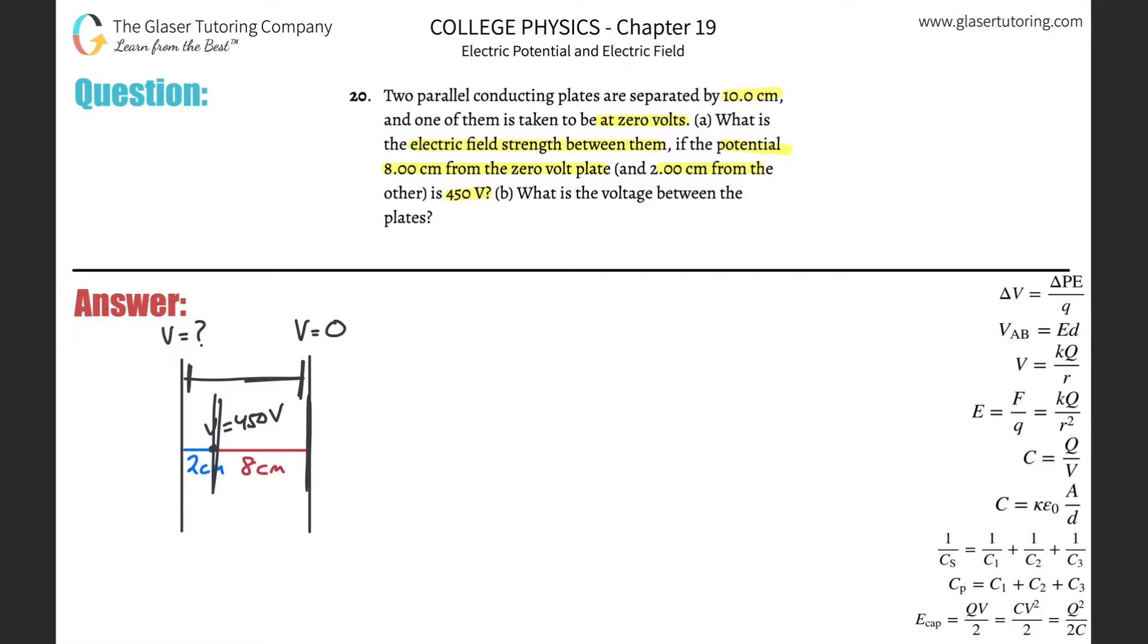So what that means is that I have a distance. Remember we have to base it off of the zero volt plate. Why? Well because remember the formula: the voltage between point A and point B basically really means the voltage difference is equal to the electric field strength between them multiplied by the distance. I need to know the difference in voltage between A and B.